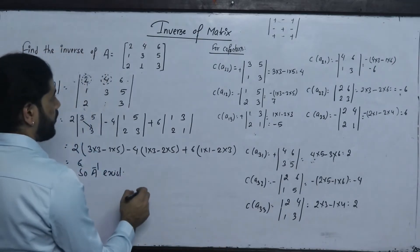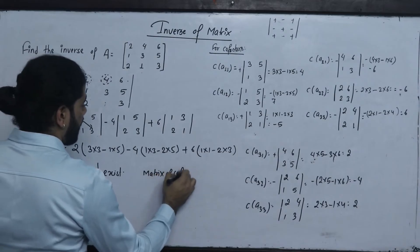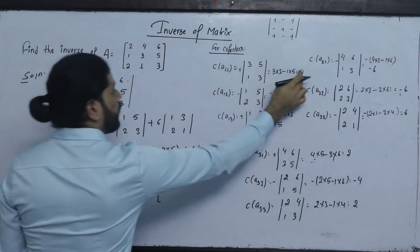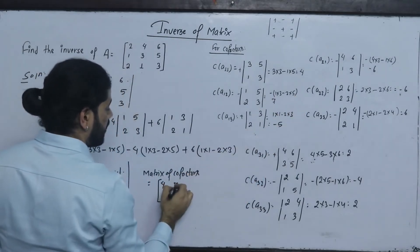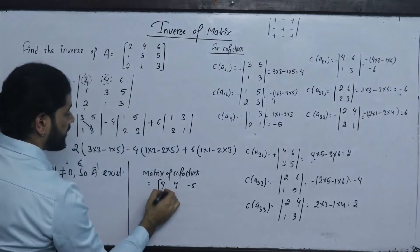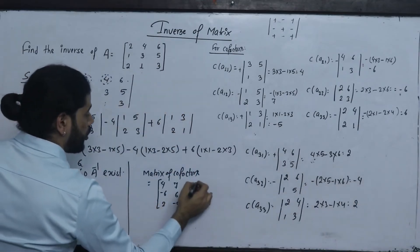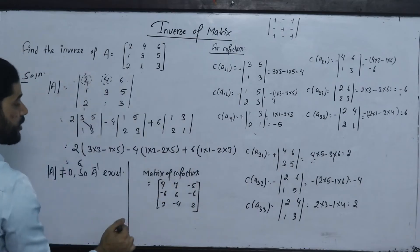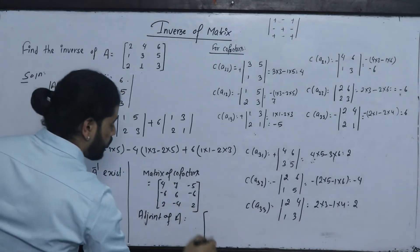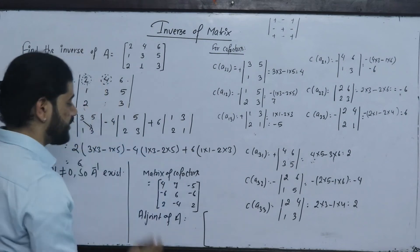Now we form the matrix of cofactors. The matrix of cofactors is assembled from all the computed cofactor values. The first row is [4, 3, 7], second row includes minus 5, minus 6, 6, and the third row has minus 6, 6, 2, minus 4, 2. Then we find the adjoint of A.